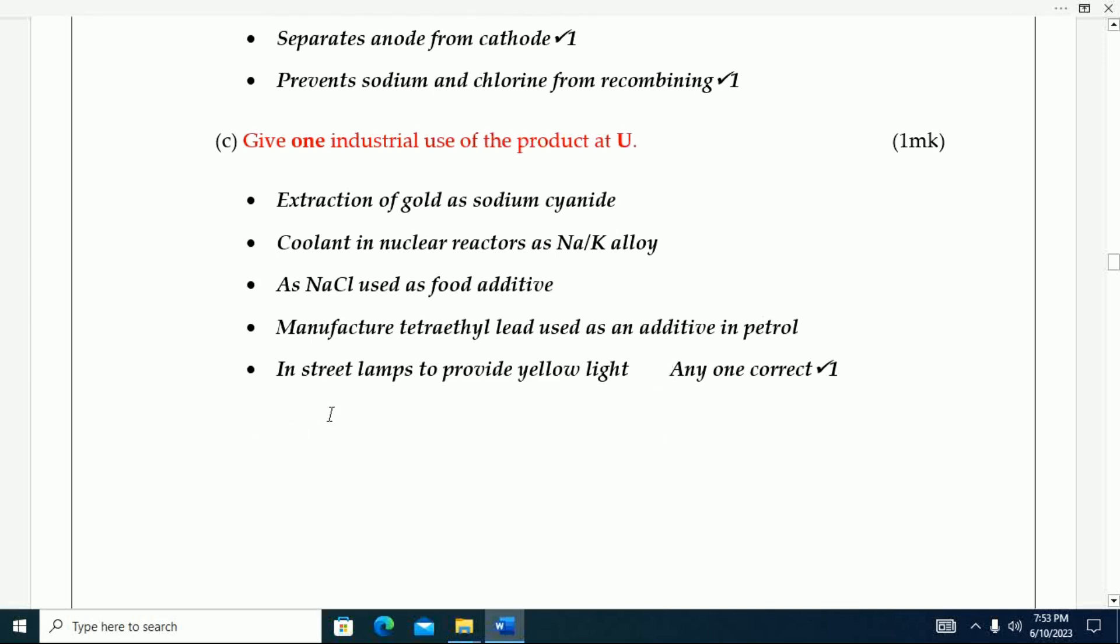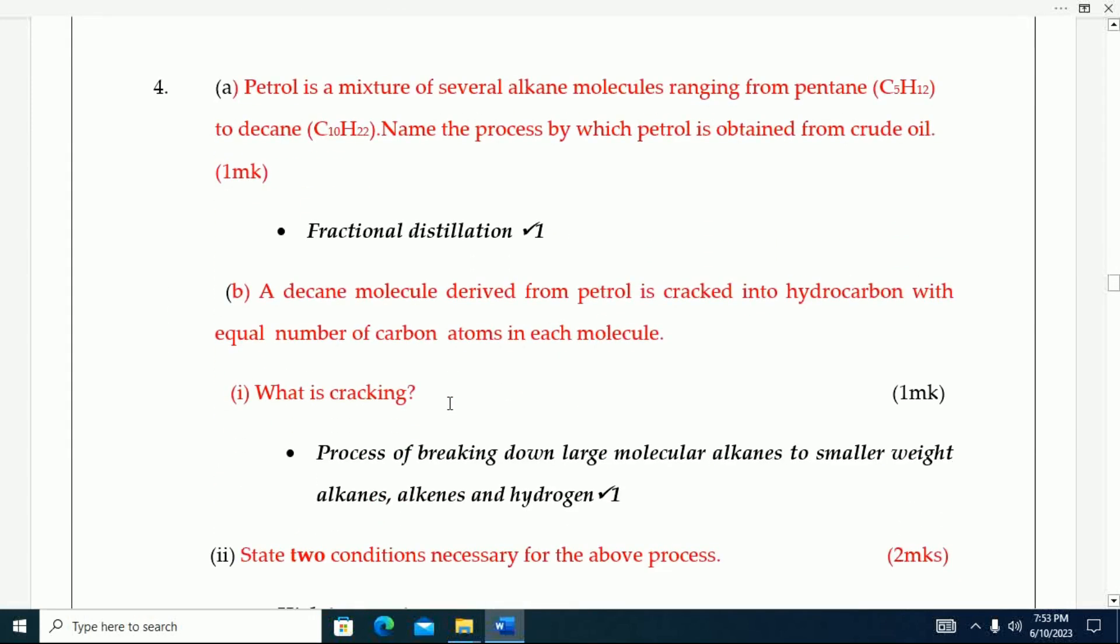Number four: A petrol is a mixture of several alkane molecules ranging from pentane and decane. Name the process by which petrol is obtained from crude oil. That one is fractional distillation.